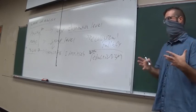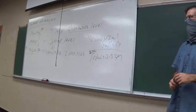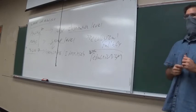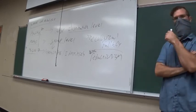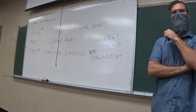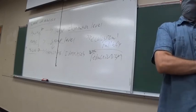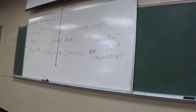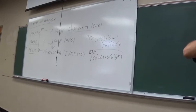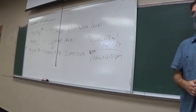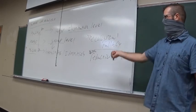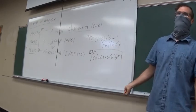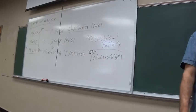Any questions about level of analysis? Reductionism is basically just the opposite of an ecological fallacy — yes, they're the opposite of each other. Ecological fallacy is big to small; small to big is reductionist.